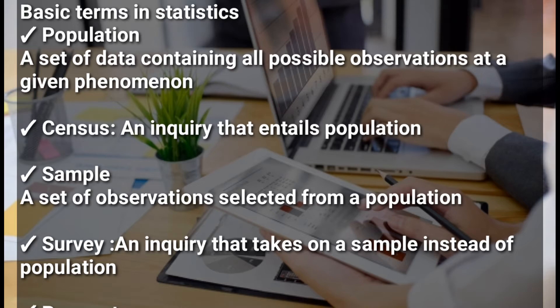Another term we have is a sample. A sample is a set of observations selected from the population. Most of the time when researchers are carrying out research, they cannot consider the whole population — they have to consider only a small group, because considering the whole population takes a lot of time and is hectic. That set of observations selected from the population is what we call a sample.